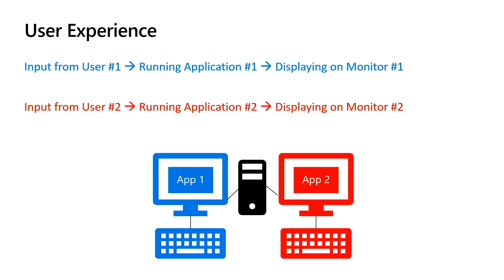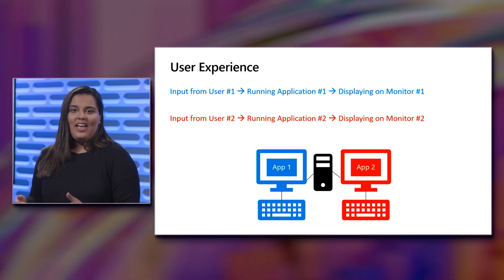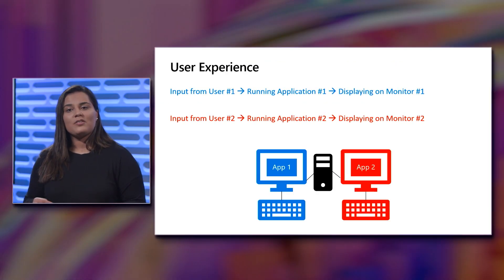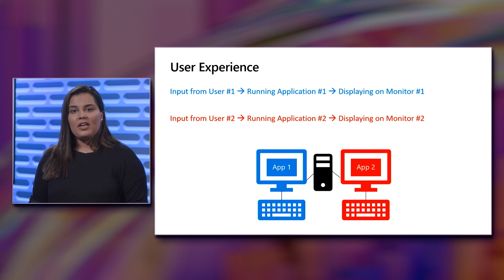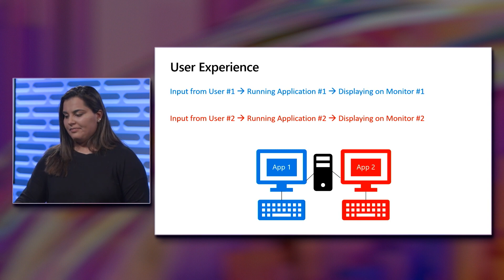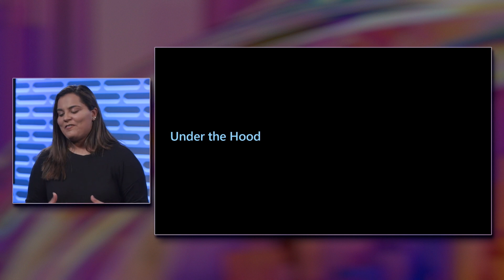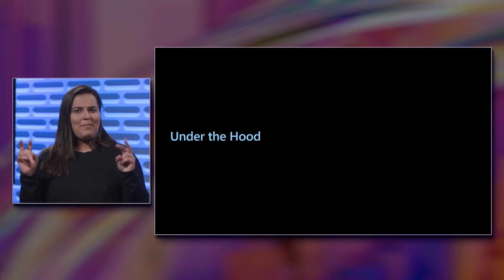Focusing on the user experience, input from user number 1 is running application number 1, displaying on monitor number 1, highlighted in blue. Input from user number 2 is running application number 2, displaying on monitor number 2. The crux of this is that it's running on only one Windows IoT Enterprise device box, compared to running two different boxes or separate scenarios that then have to interact with each other. We're bringing everything into one box with two applications running simultaneously.